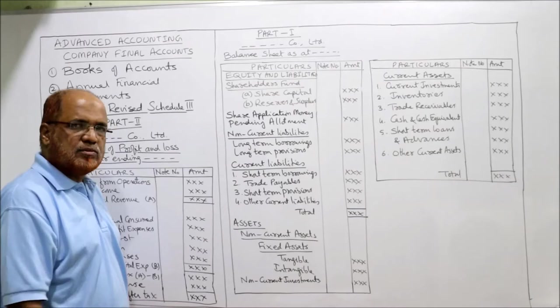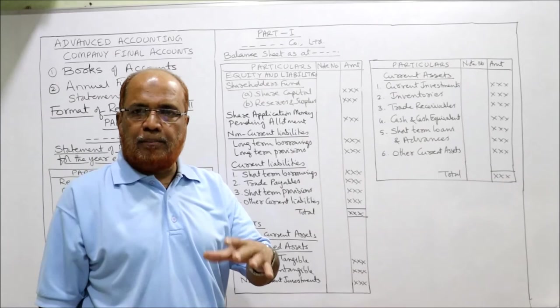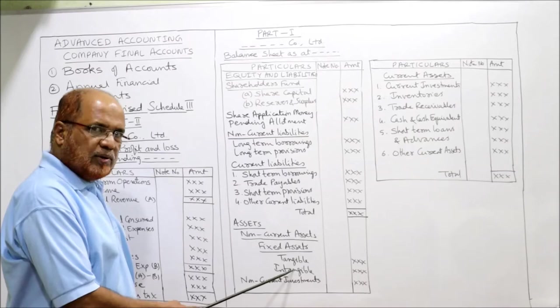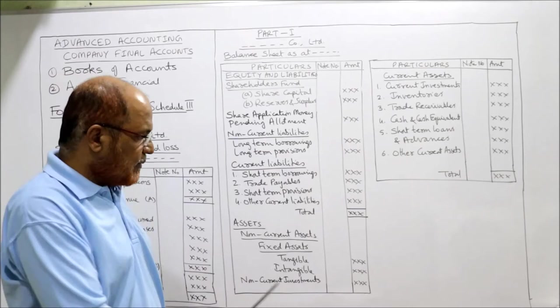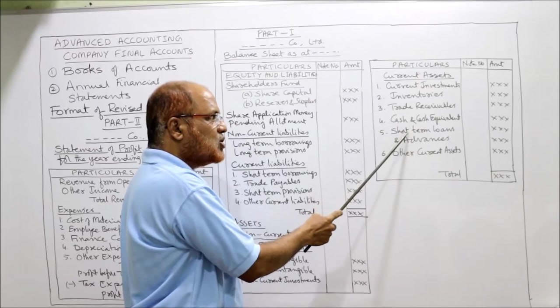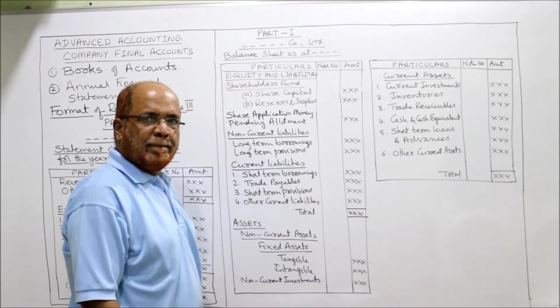On the assets side, assets are classified into non-current assets and current assets. Non-current assets consist of fixed assets, which are further divided into tangible and intangible. There is no need to write all the details of tangible assets like land, building, plant, machinery, and furniture in the balance sheet - those details will be shown in the notes. Non-current investments are also included if present. Current assets include current investments, inventories, trade receivables, cash and cash equivalents, short-term loans and advances, and other current assets. The total of assets equals the total of liabilities.